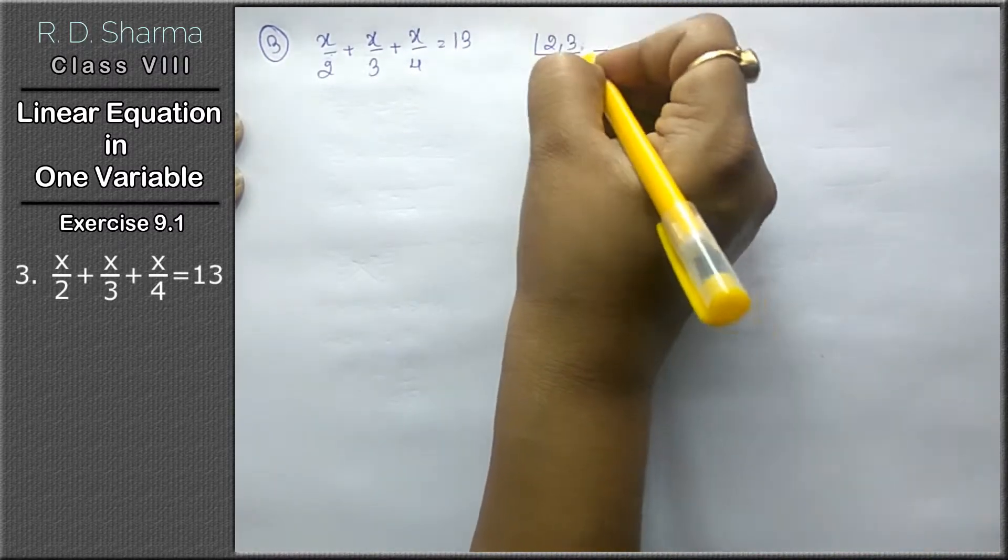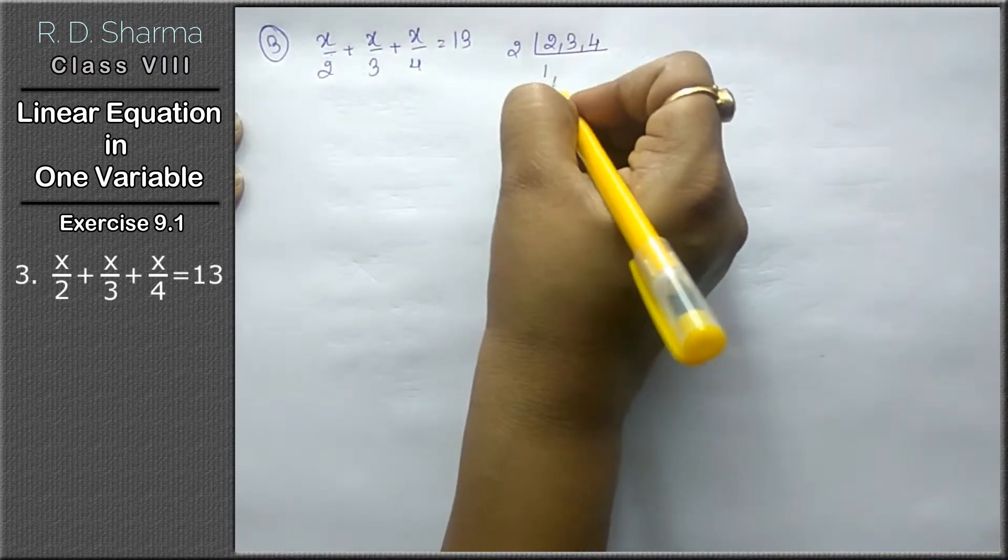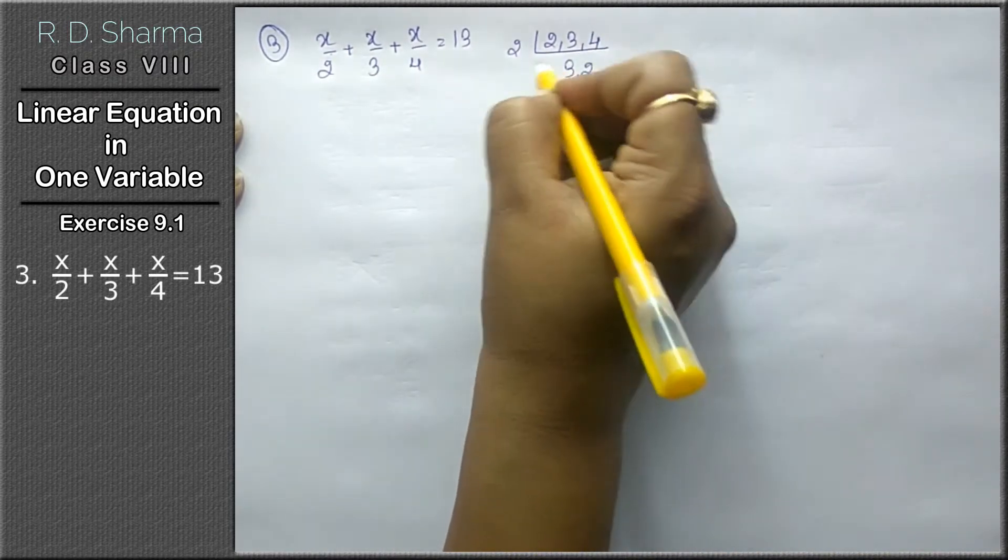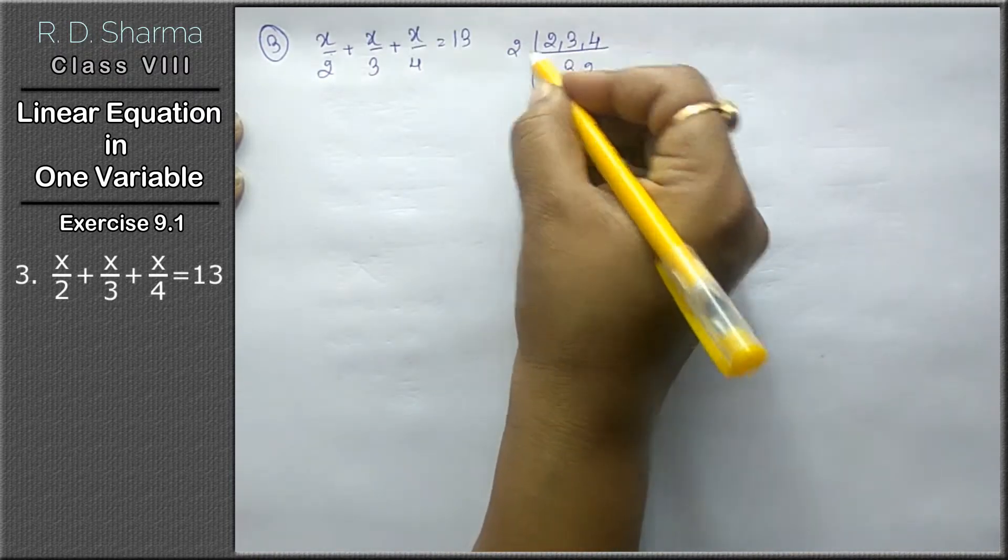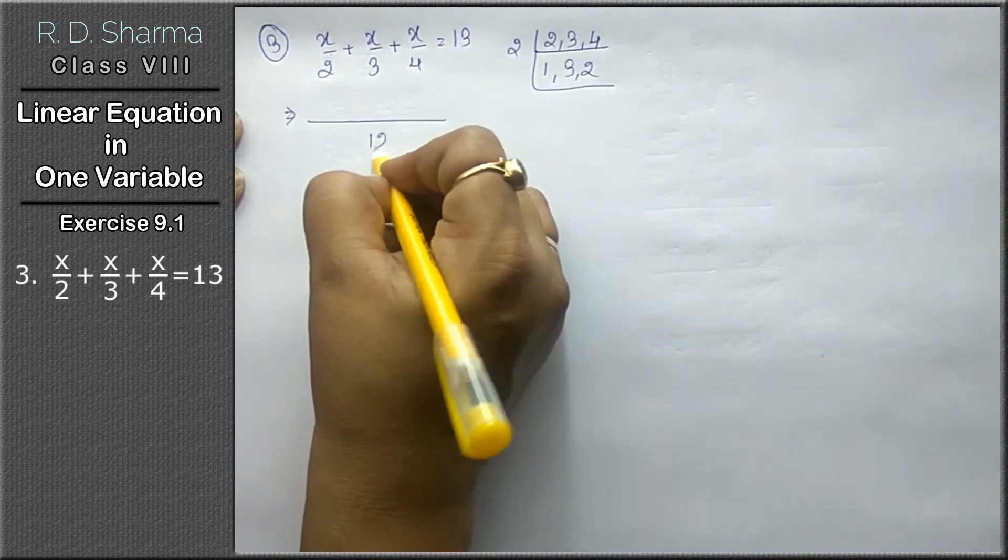Now we will take the LCM of 2, 3, and 4. Two times 1 is 2, 3 as it is, 2 times 2 is 4, 2 times 3 is 6, 6 times 2 is 12. So 12 is the LCM.